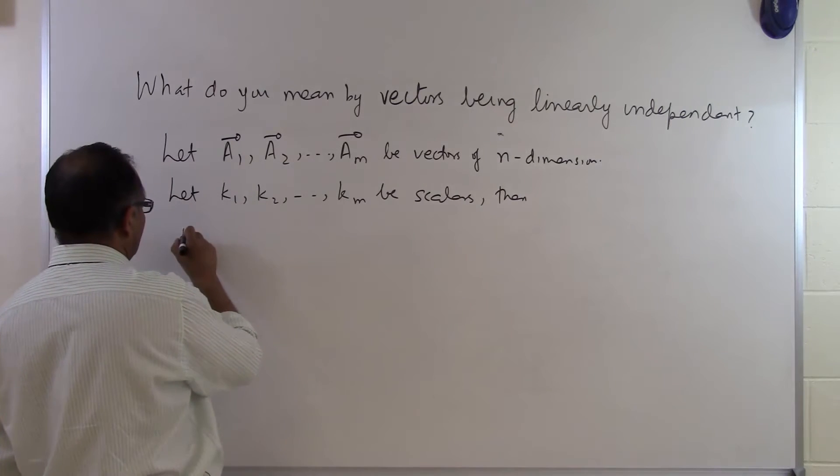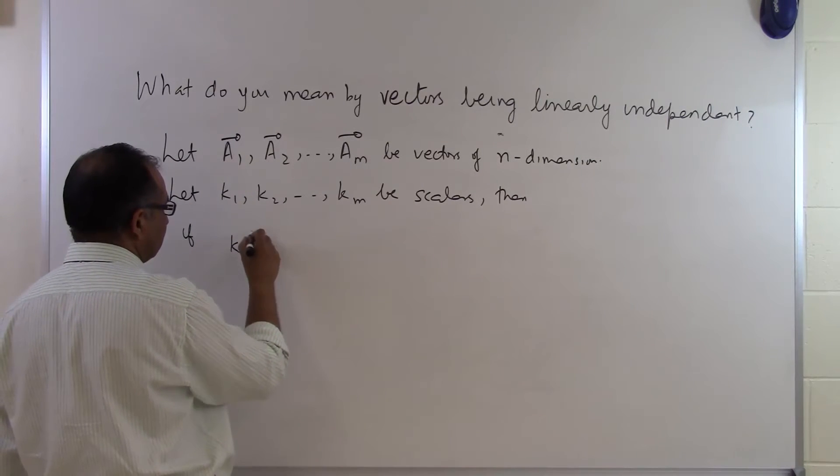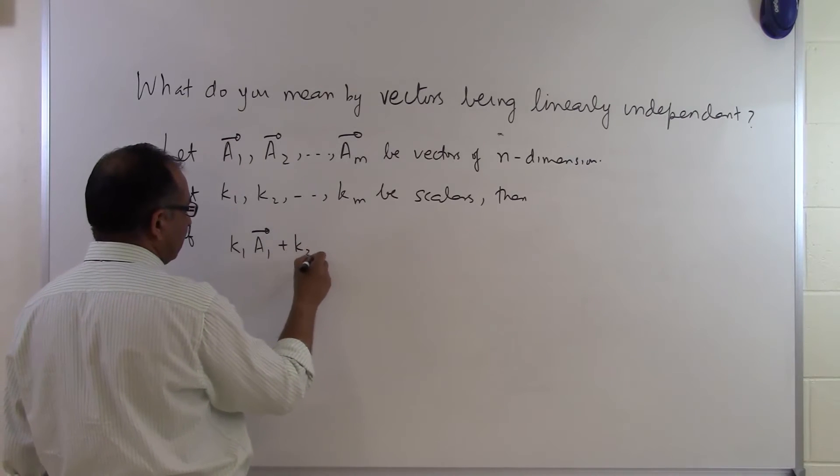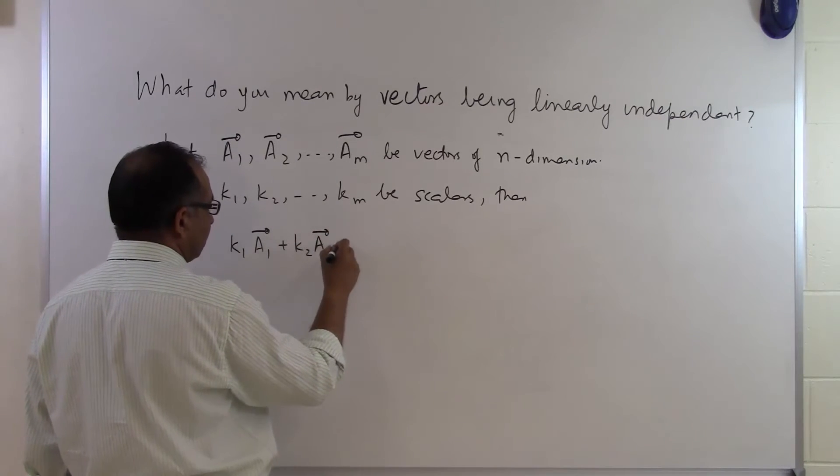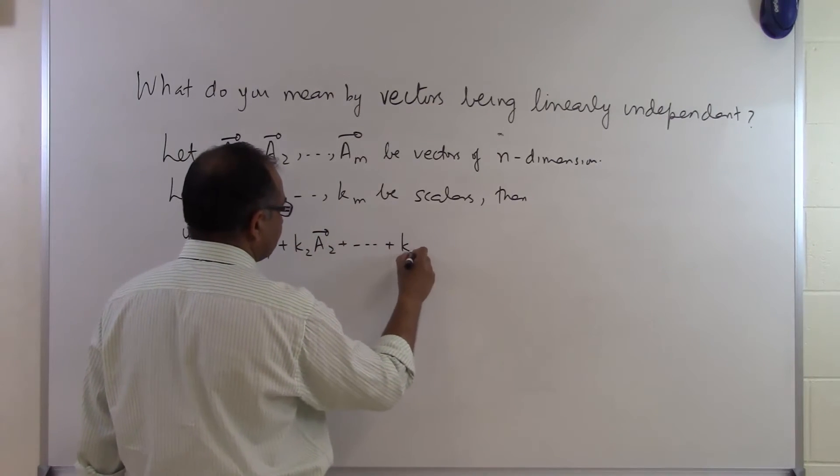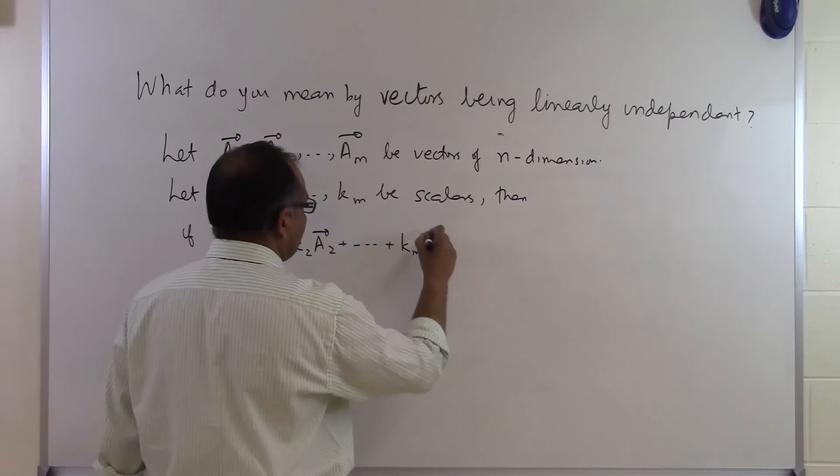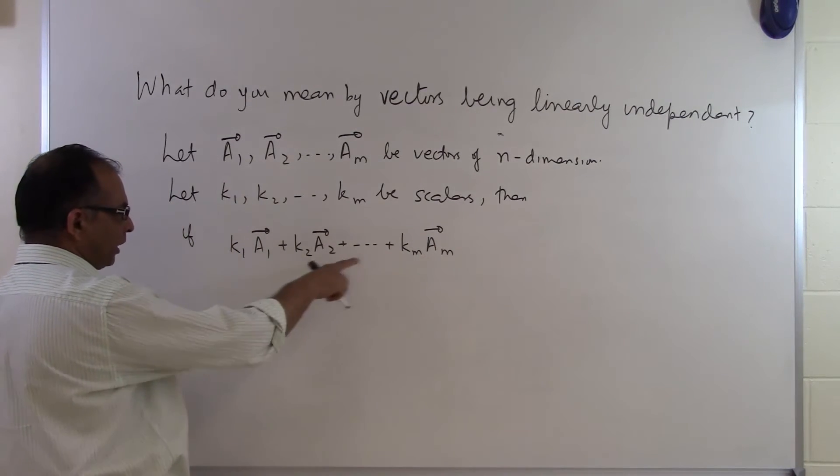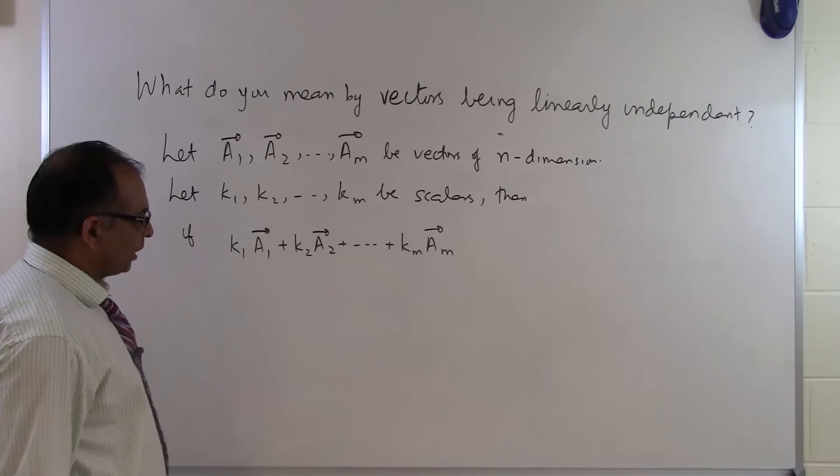Then if k1 times a1, so what we are doing is we are taking a linear combination of the m vectors. And what we are going to do to this linear combination of m vectors where k1, k2, km are just scalars.